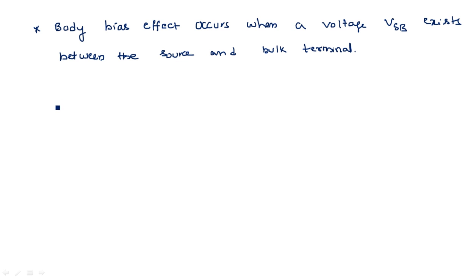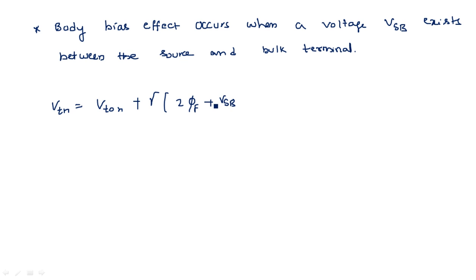The change in threshold voltage for an NMOS transistor is given by: VTN = VT0 + gamma × (√(2φF + VSB) − √(2φF)), where VT0 is the standard threshold voltage without the substrate bias effect, gamma is the body bias coefficient, φF is the bulk Fermi potential, and VSB is the source-to-substrate voltage.